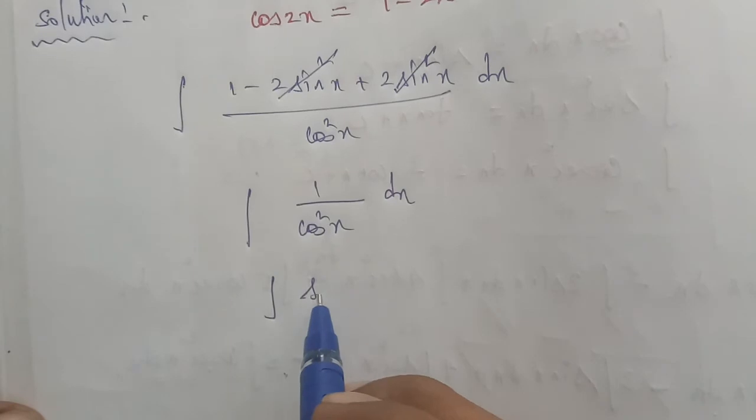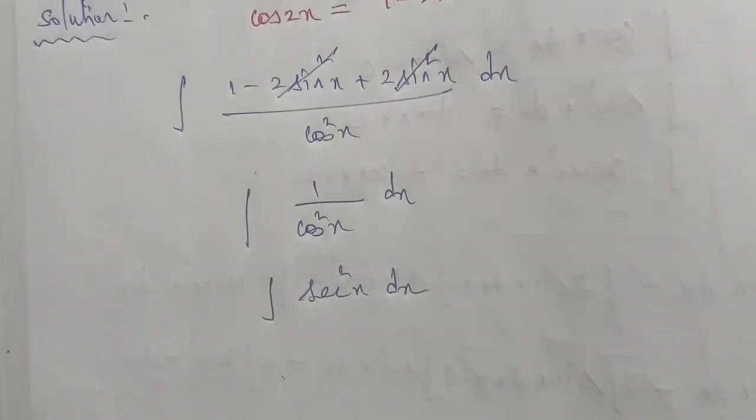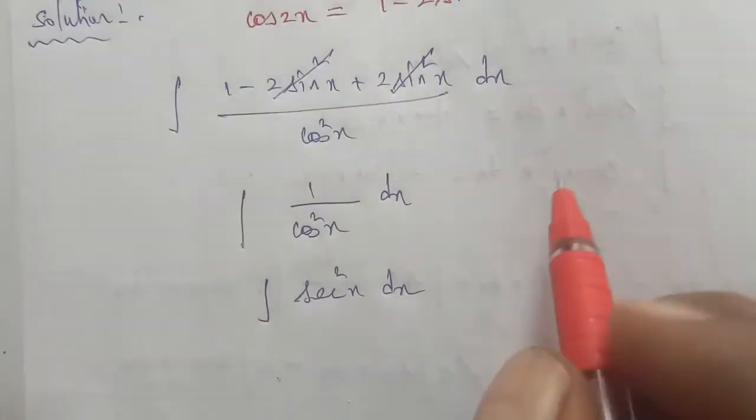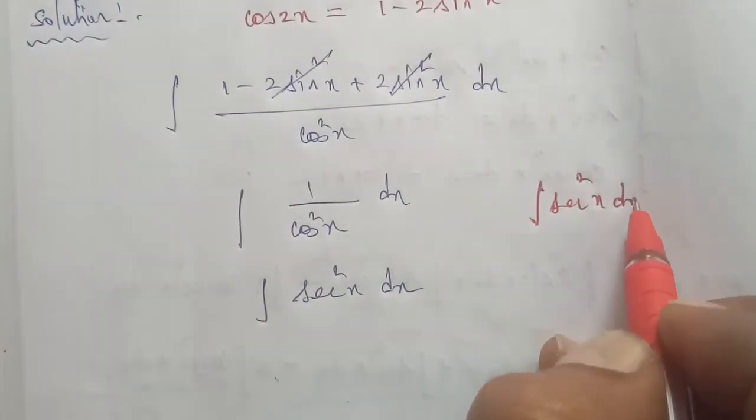So integration of sec square x into dx. The formula: integration of sec square x into dx is tan x.